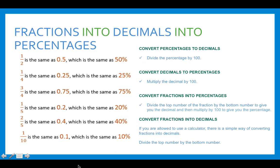To convert percentages into decimals, divide the percentage by 100. To convert decimals to percentages, multiply the decimal by 100. To convert fractions into percentages, divide the top number of the fraction by the bottom number to get the decimal, then multiply by 100. To convert fractions into decimals using a calculator, simply divide the top number by the bottom number.